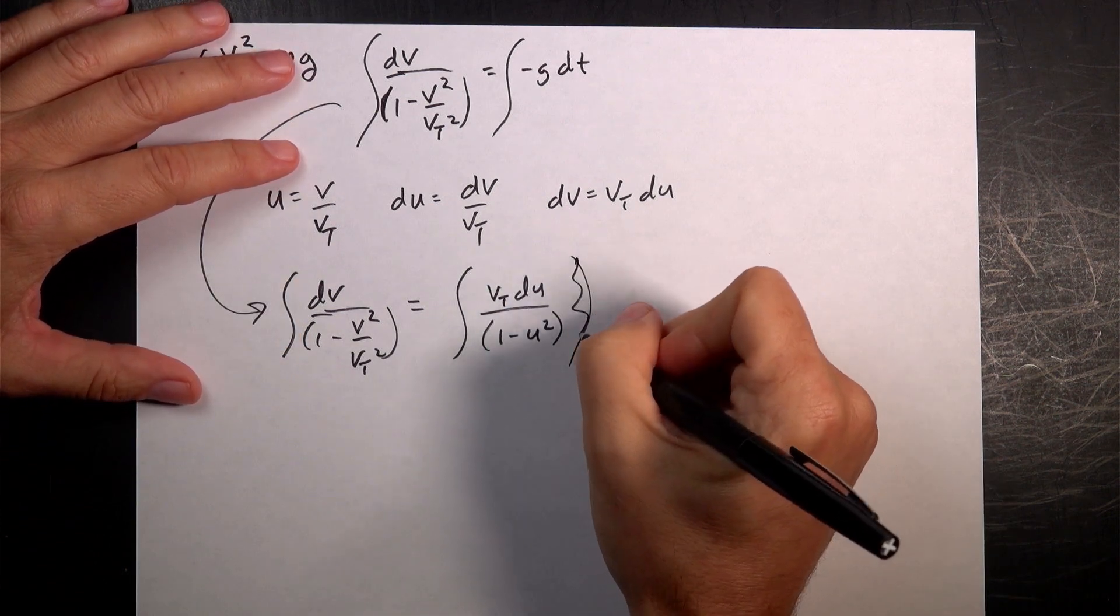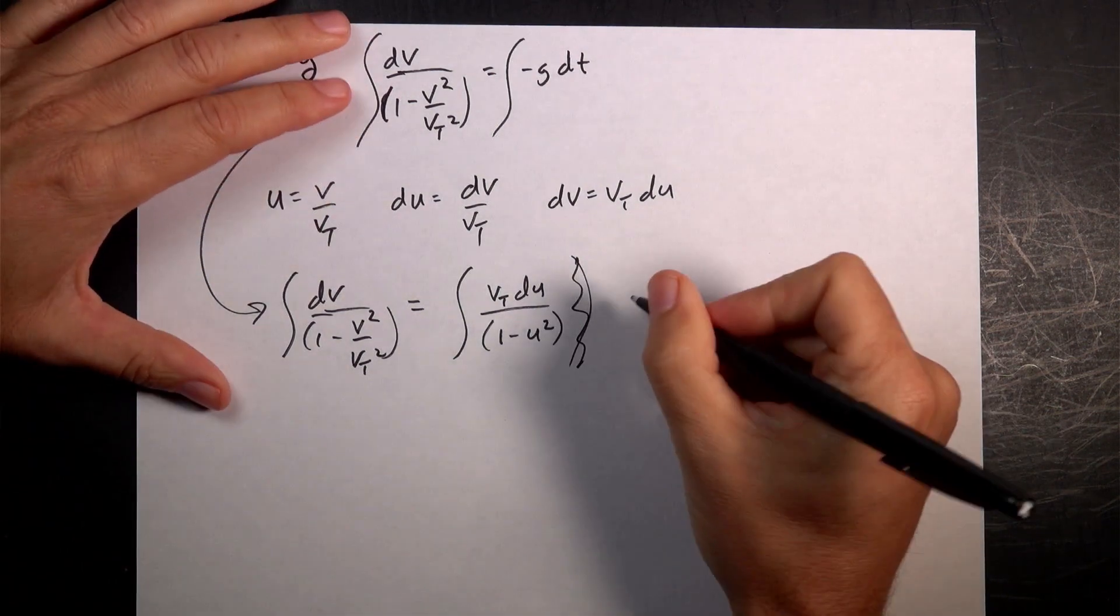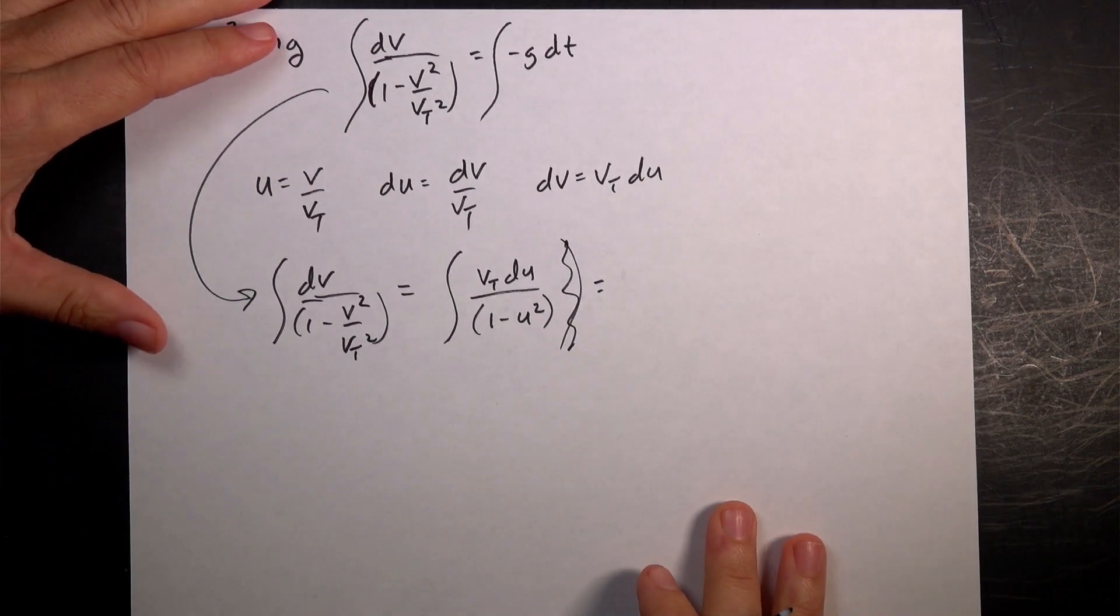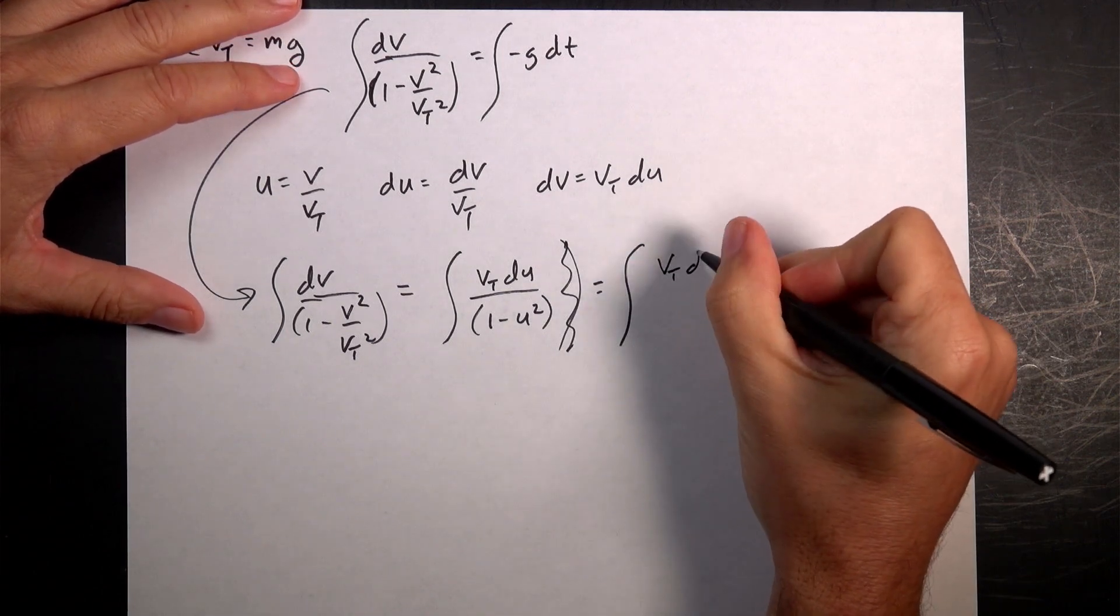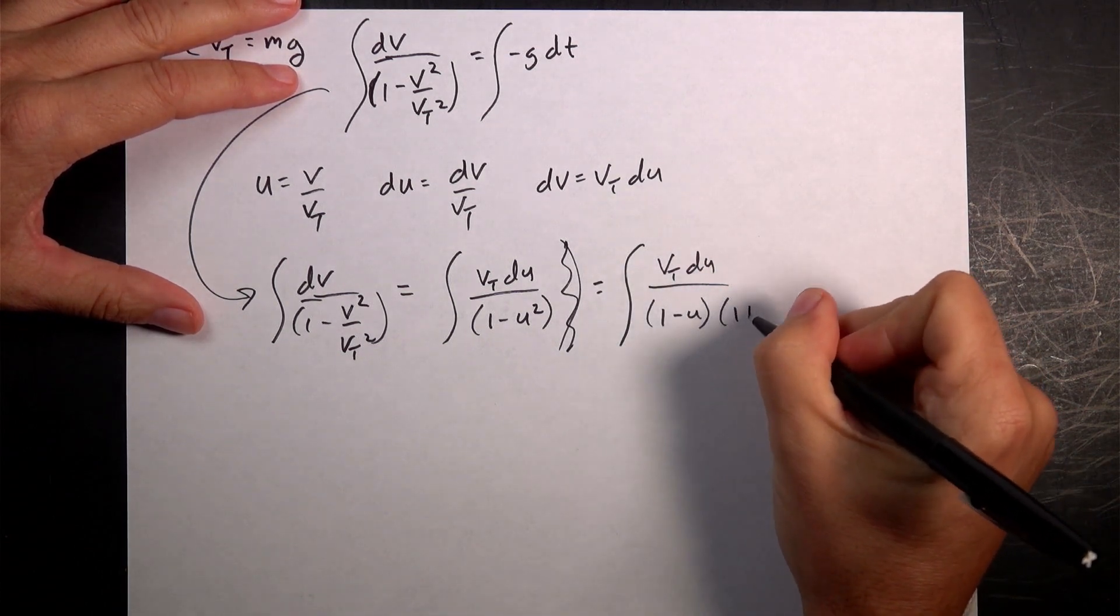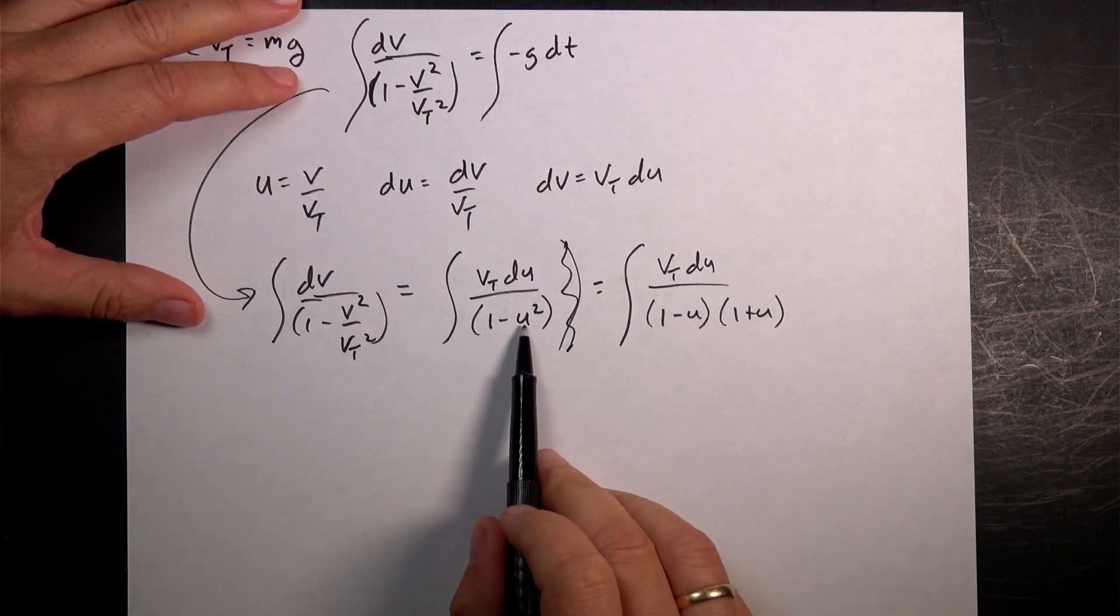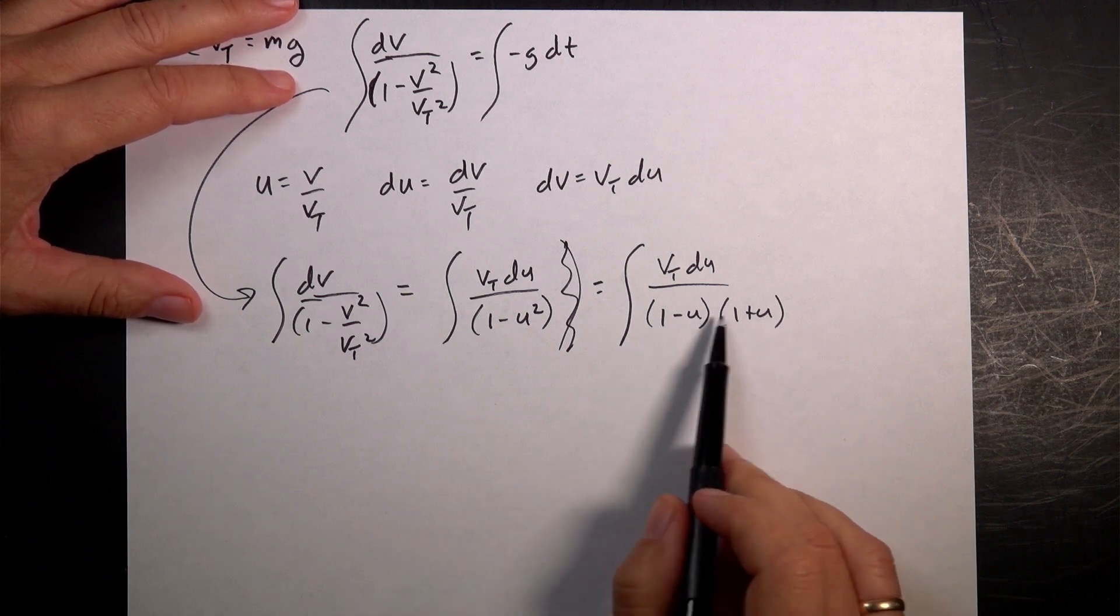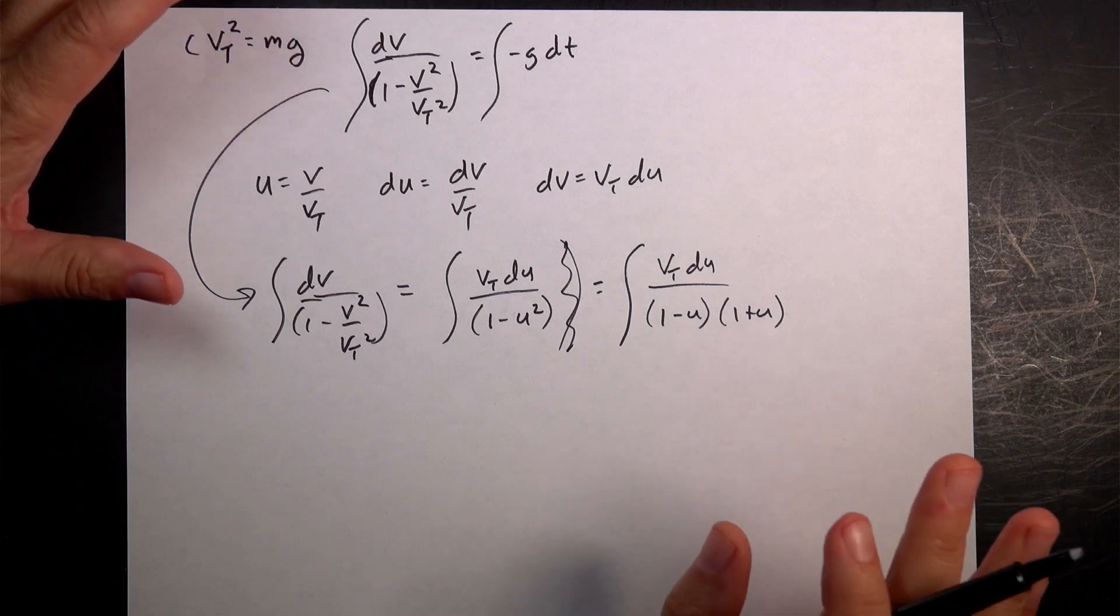Still, that's a very difficult integral. Okay. So let's write this. So these are tricks. So if you don't see these tricks, not a big deal. You know, tricks are just something that you accumulate over time. So I'm going to write this as vt du over 1 minus u times 1 plus u, right? Because if I have 1 squared minus u squared, then I can write it as 1 minus u times 1 plus u. So that's how that works.